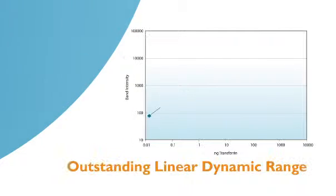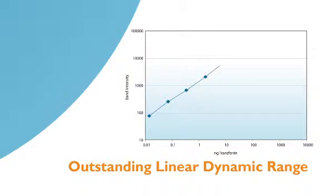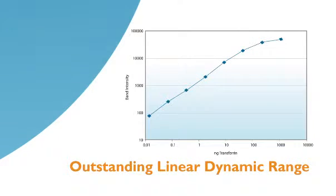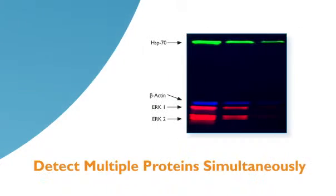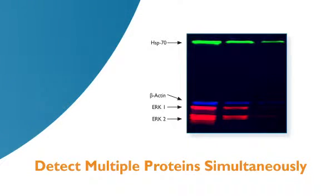Direct fluorescent Western detection is a stable, non-enzymatic alternative to chemiluminescence and film imaging, providing superior linearity without compromising sensitivity.